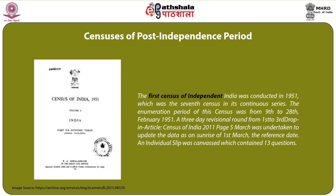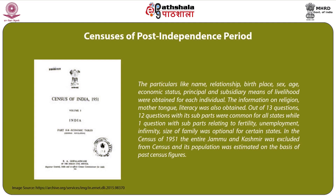An individual slip was canvassed in the 1951 census containing 13 questions. Particulars like name, relationship, birthplace, sex, age, economic status, and principal and subsidiary means of livelihood were obtained for each individual, along with information on religion, mother tongue, and literacy. Out of 13 questions, 12 with subparts were common for all states, while one question with subparts relating to fertility, unemployment, infirmity, and size of family was optional for certain states. In the census of 1951, the entire Jammu and Kashmir was excluded and its population was estimated on the basis of past census figures.